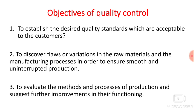The quality department will suggest necessary actions to the production department and corrective measures will be taken to achieve a good quality product. Another objective is to evaluate the methods and processes of production and suggest further improvements. For example, if you are dealing with machining, you may change cutting speed, feed, and depth of cut. The quality department will evaluate those parameters and suggest various improvements.